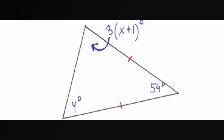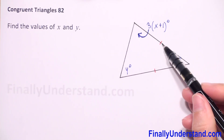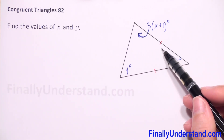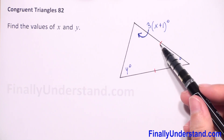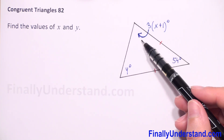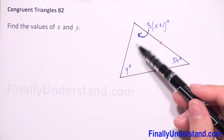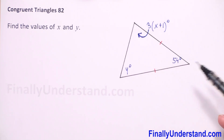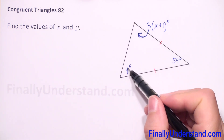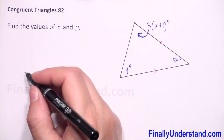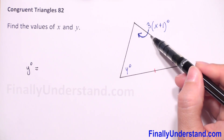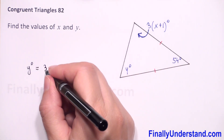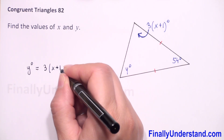We have to find values of x and y. We have given these two red marks, which means we have an isosceles triangle. If these two sides are congruent, it means that these two angles are congruent also. So we have one equation: the measure of this angle is y degrees, so it must be equal to this angle, which is given by the expression three times x plus one degrees.